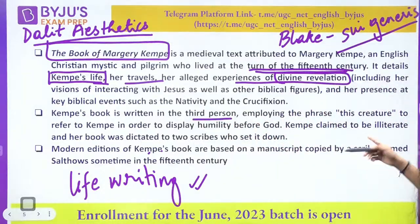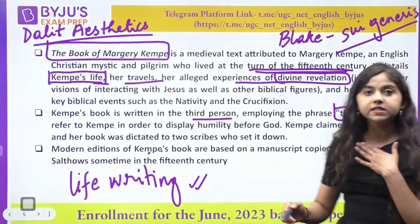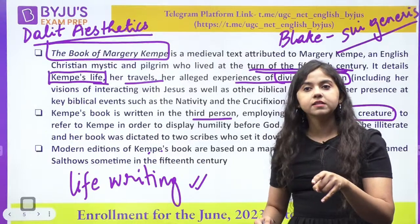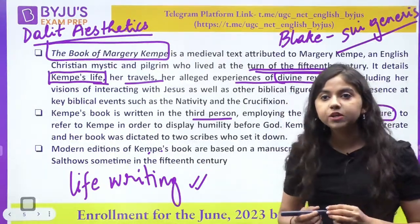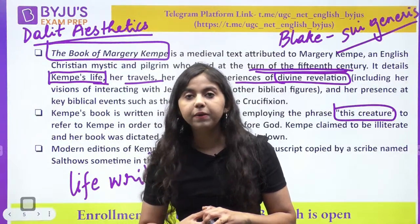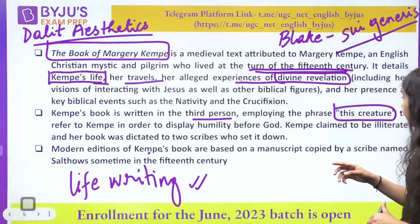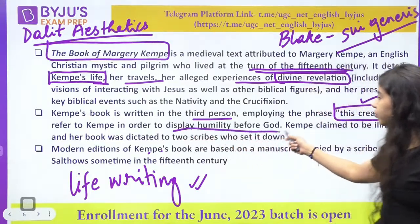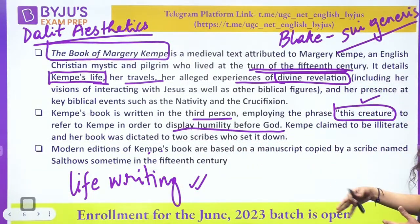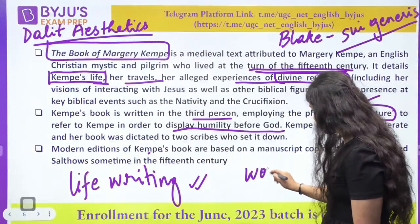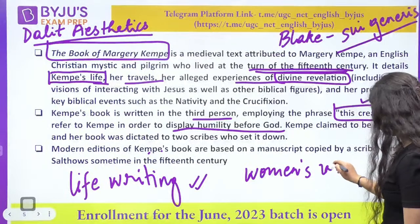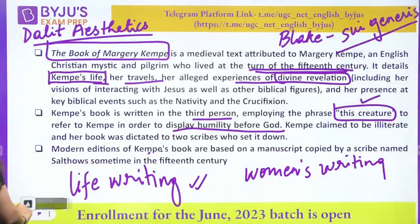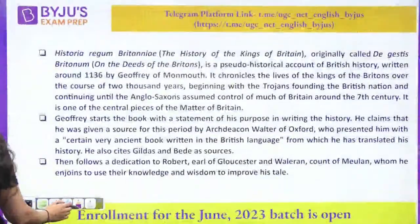The Book of Margery Kempe — this question has also come about third person narration. Remember: first person is 'I,' second person is 'he/she.' It is written in third person to tell you about humility altogether. Margery Kempe, women's writings — I'll quickly cover this in the next time as well, because this is a very interesting and important topic. There are questions they are of course asking. Let's move on to the next part.